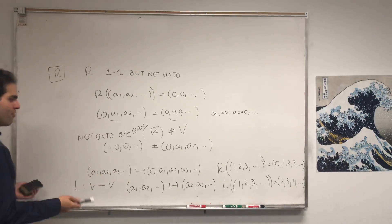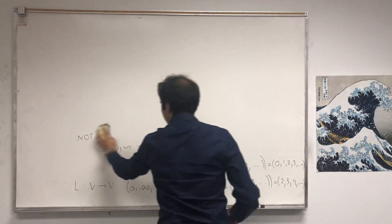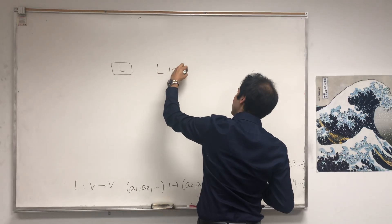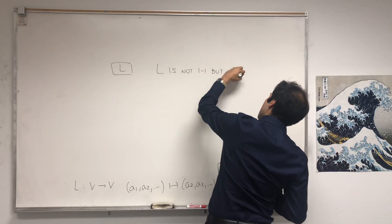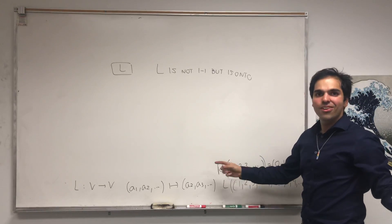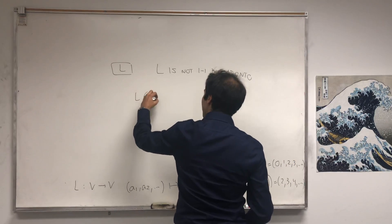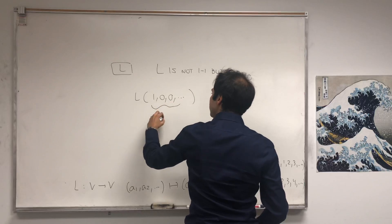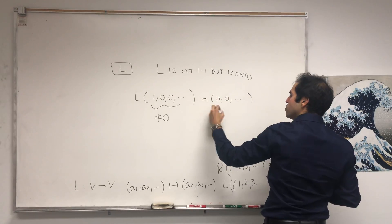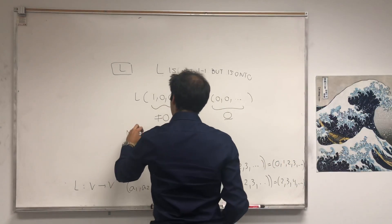Now what about L? I'm claiming that for L it's the opposite: L is not one-to-one, but it is onto. To show it's not one-to-one, you need to show the null space is non-trivial. Consider L of (one, zero, zero, zero, ...). This is a non-zero sequence, but L shifts things to the left, giving zero, zero, zero, ... which is the zero sequence. So there's a non-trivial element with L of that sequence equal to zero.